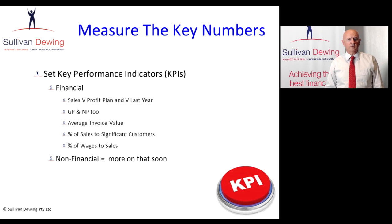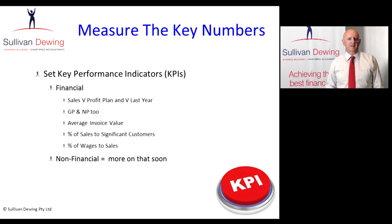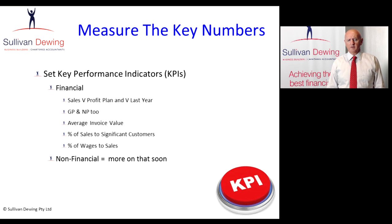Other financial KPIs include things like average invoice value, percentage of sales to significant customers — you want to make sure you're not selling too much to one or a couple of customers — and also things like percentage of wages to sales. If you're in retail, you might also want to think about your percentage of rent to sales.